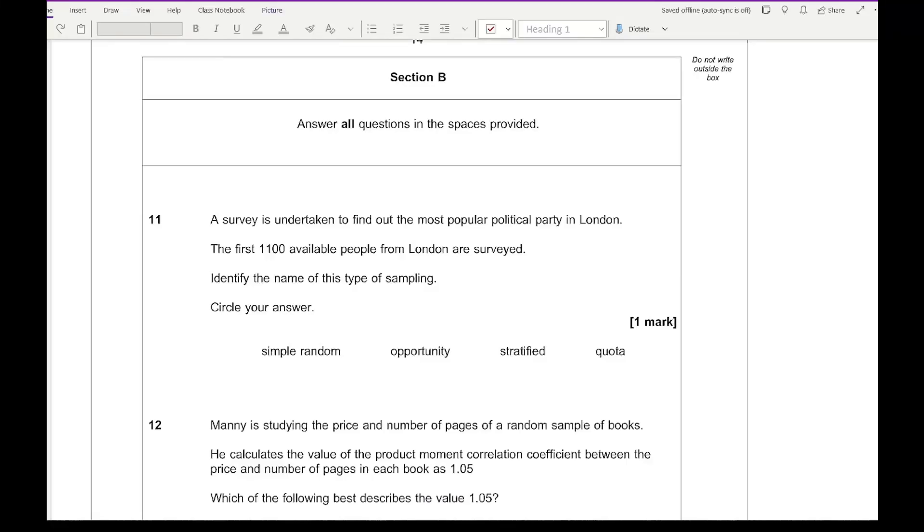Let's get started on section B of the 2019 paper 2. Question 11: A survey is undertaken to find out the most popular political party in London. The first 1,100 available people from London were surveyed. Identify the name of this type of sampling and circle your answer. The correct answer is opportunity sampling, simply because they've picked the first 1,100 people in one place with no random element to it or no looking at number of males or females or any other genders. Quota sample is not quite right because they've picked one particular city that they actually want. They've chosen from the population but not used a particular method to filter out that sample collection.